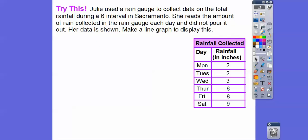All right, so let's try another one here. Julie used a rain gauge to collect data on the total rainfall during a 6-interval day period. She reads the amount of rain collected in the rain gauge each day and did not pour it out. So on Monday, she got 2 inches of rain. On Tuesday, she didn't get any rain, so it stayed at 2 inches. On Wednesday, it looks like they gained an inch. And then from Wednesday to Thursday, it added another 3 inches. And then on Thursday to Friday, 1 inch. And Saturday, 9 inches.